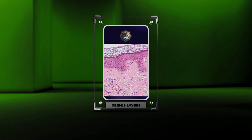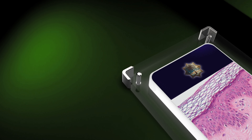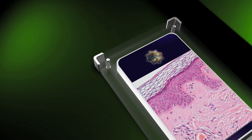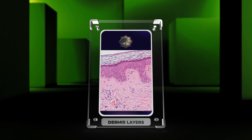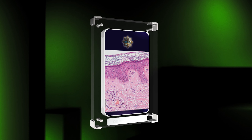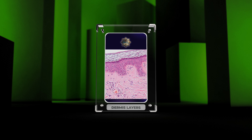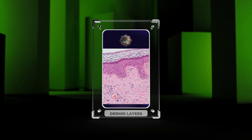Welcome to today's lecture on the histology of the dermis. The dermis is the second layer of the skin, located below the epidermis. It is composed of various intricate components that provide structural support and play crucial roles in various physiological processes. Throughout this lecture we will explore the different elements of the dermis in detail and understand their significance.